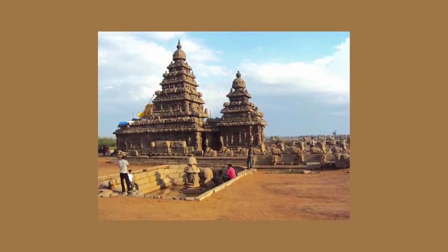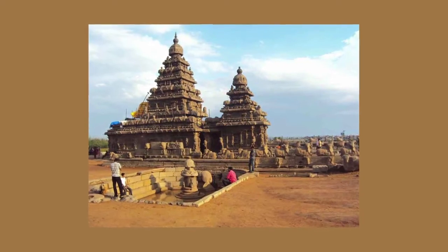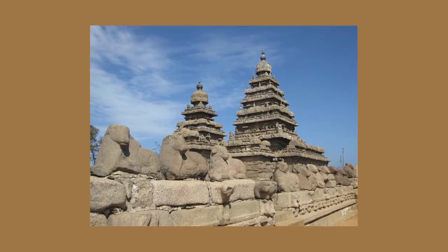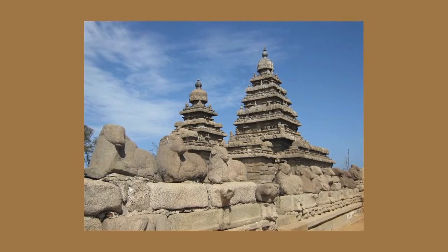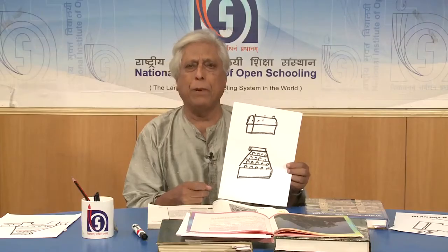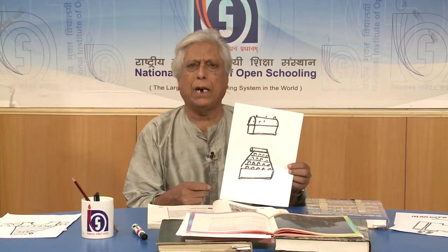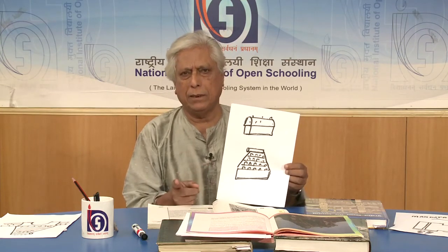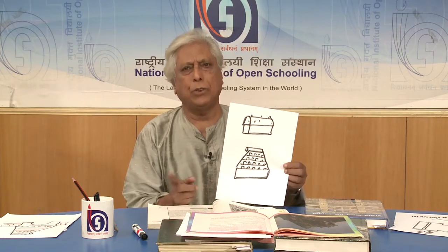The Pallavas, especially Narasimhavarman, was one of the great admirers of art and architecture. During his period, he ordered the construction of model structures for architecture in Mahabalipuram, which was their capital — also known as Mamallapuram. They are very famous for the Pancharathas, which were carved out of single stone. They are known as the Dharmarajaratha, Arjunaratha, Ganesharatha, Draupadiratha, and others.